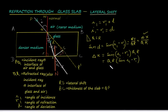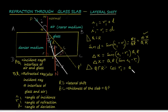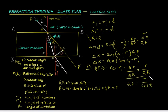We need to find the value of QR. For that we take the other right-angle triangle QFR. From this triangle, cos(r1) equals QF divided by QR. QF is the thickness of the glass slab, represented by the letter t, so cos(r1) equals t divided by QR. From this, QR equals t divided by cos(r1).